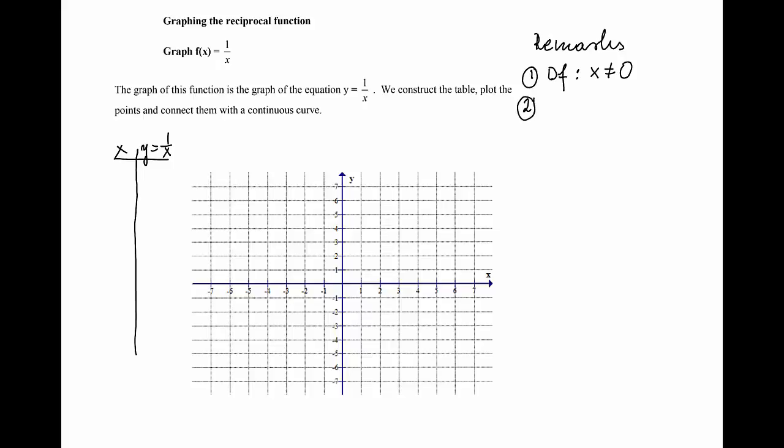Second, we can easily justify that if x is positive, then y as the reciprocal is also positive. And if x is negative, then y is negative. That means that the graph will be only in the third and the first quadrant.